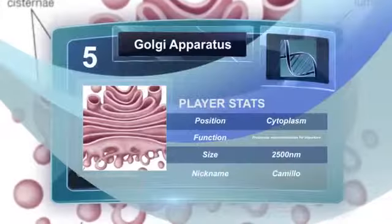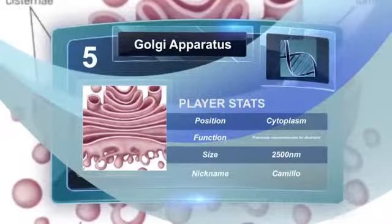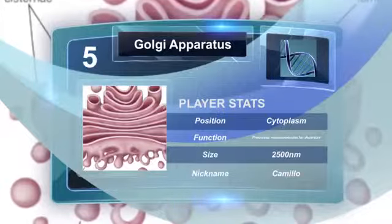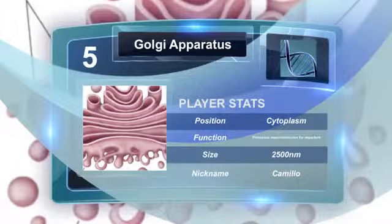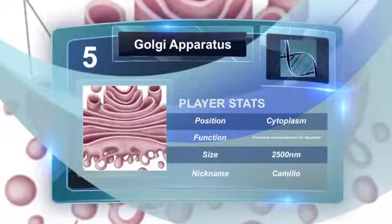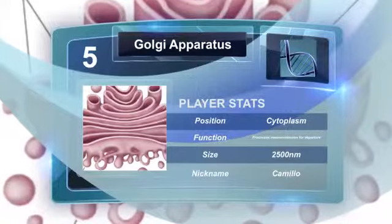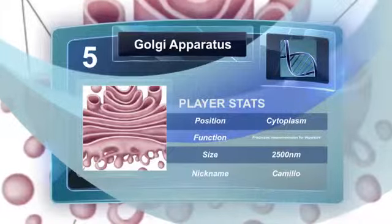The Golgi apparatus is an organelle that processes and packages macromolecules such as proteins and lipids after their synthesis before they can make their way to their destination.